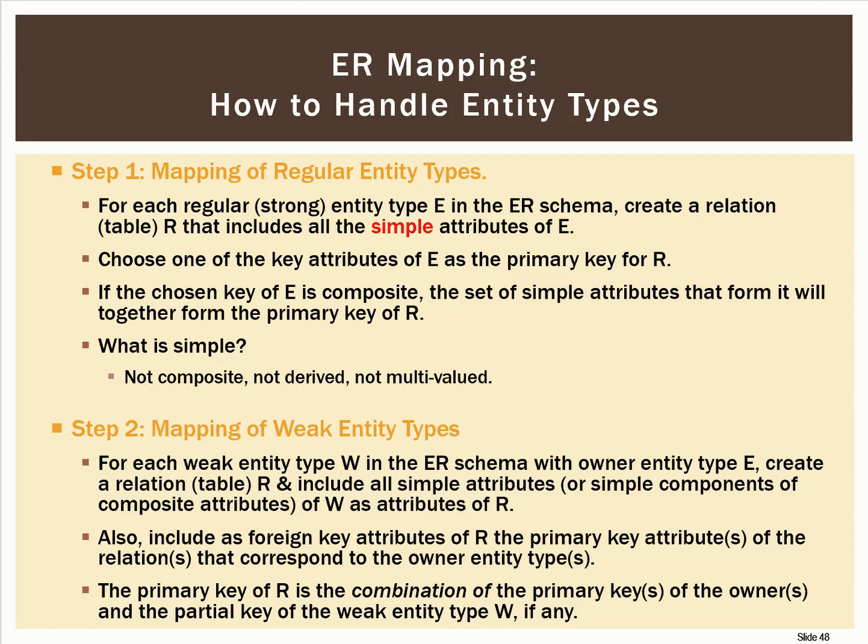Now let's move on to step two: the mapping of weak entity types. The way to map a weak entity type is exactly the same as mapping a strong or regular entity type — you do all the same things discussed in step one. There's only one difference: because it's a weak entity type, it depends on adding to the physical database table the primary key of the strong entity type upon which it depends. So step two is pretty straightforward — follow step one and then add in the primary key of the strong entity to create a unique identifier for every row of the table.